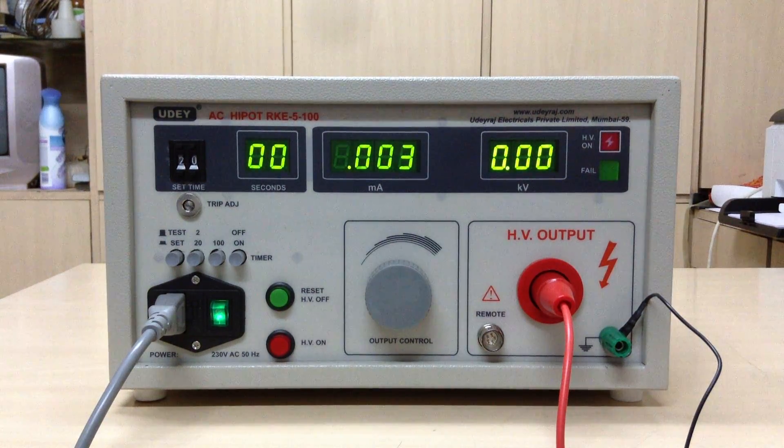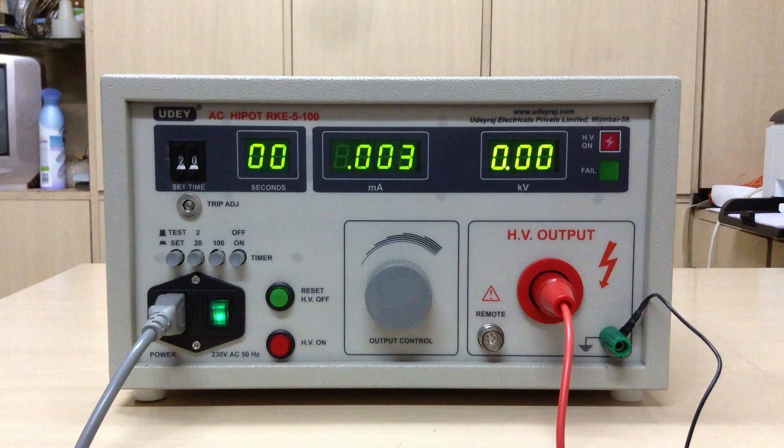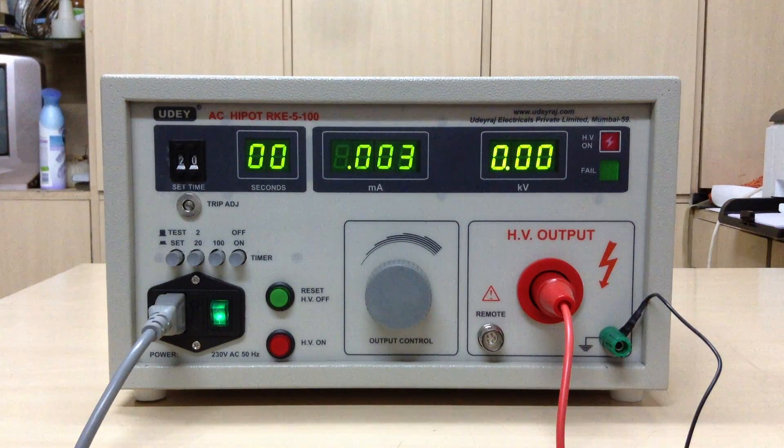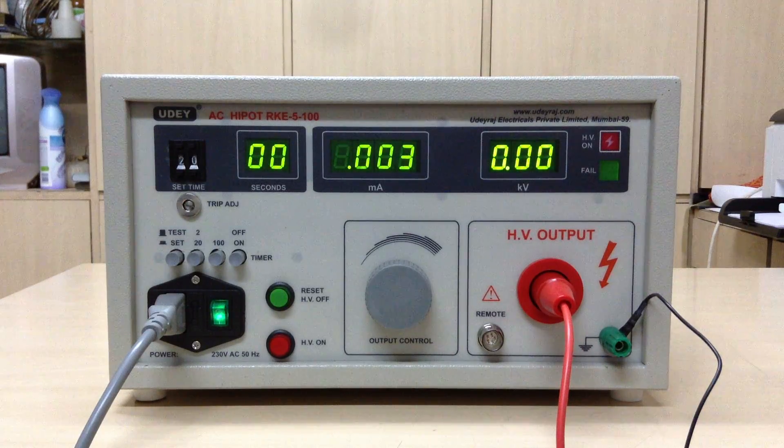Today we will take a demo on AC Hypot tester manufactured by Udayaj Electricals Pvt Ltd Bombay. This is a 0-5 kV tester with 100 mAh leakage current.